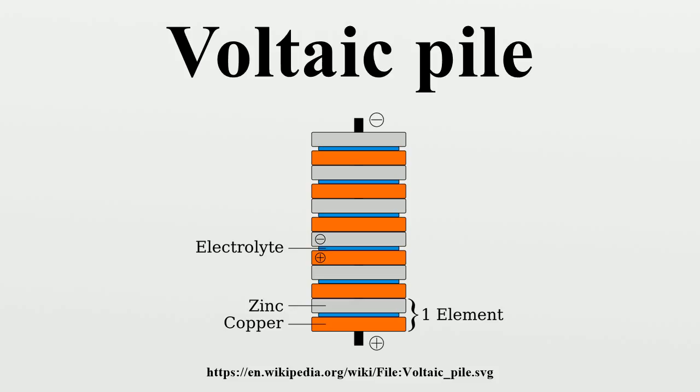When the cell is providing an electrical current through an external circuit, the metallic zinc at the surface of the zinc electrode is dissolving into the electrolyte as electrically charged ions, leaving two negatively charged electrons behind in the metal. Zn → Zn2+ + 2e-. This reaction is called oxidation.